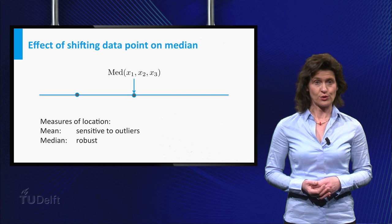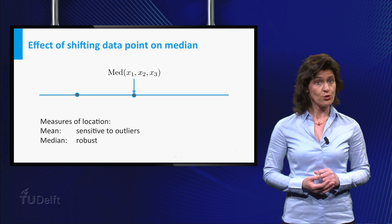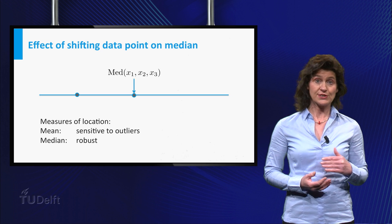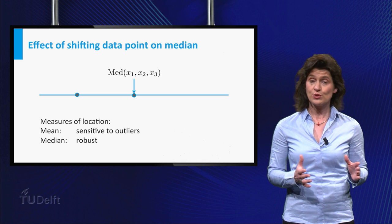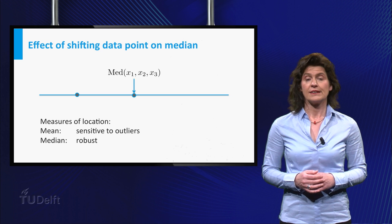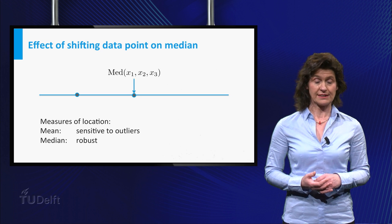You can think of more measures of center or location. A property all these measures should have though, is that if you add a constant C to all individual data points, its location summary should do the same. Giving it a little thought, you will see that the mean and the median of a dataset have this property.